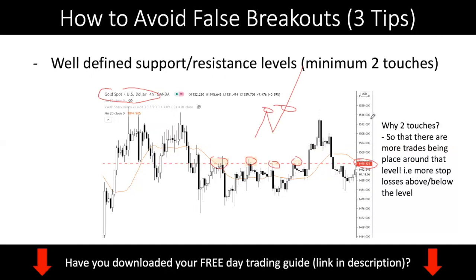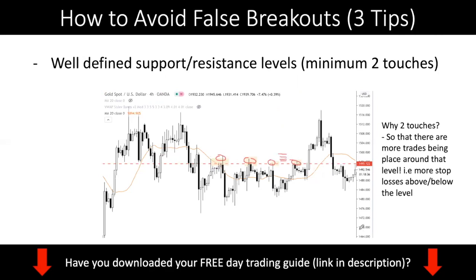The rationale is simple. You want two touches because that means there are more traders trading around that level. With more touches, there are more sellers above, and all those sellers put their stop losses above the level. During the breakout, when price goes up, those stop losses are actually buy-stop orders, which further push price higher. So when you have multiple touches, there are a lot of stop losses above the level — buy-stop orders — which fuel the movement and help price move higher.